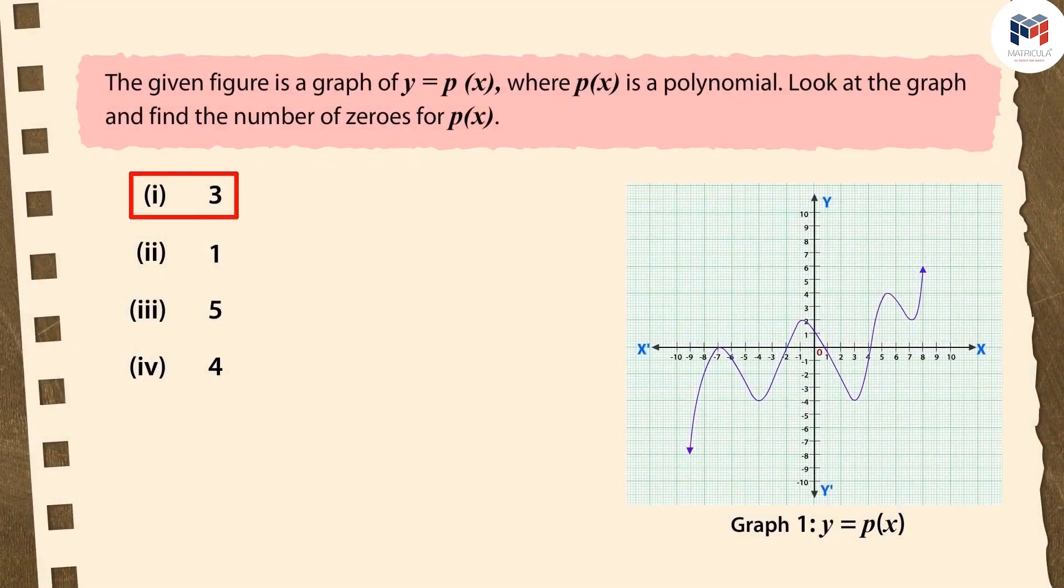If you have chosen the first option, it is a good try. But this is the wrong answer. While counting the points of intersection on the x-axis, you forgot the coincident points.